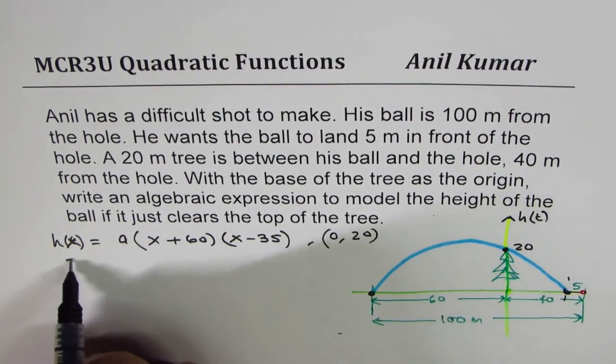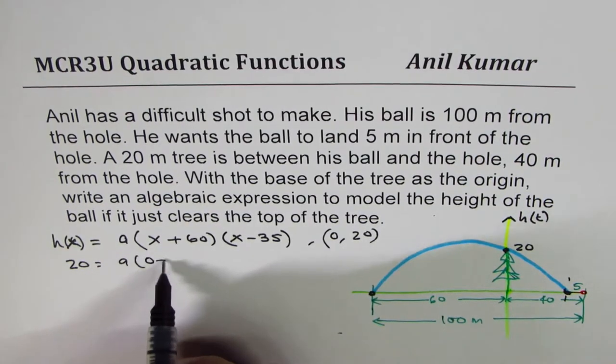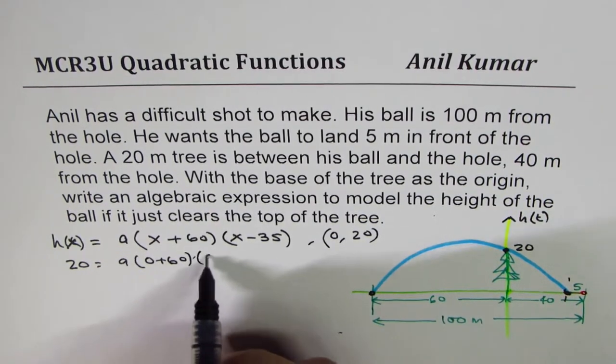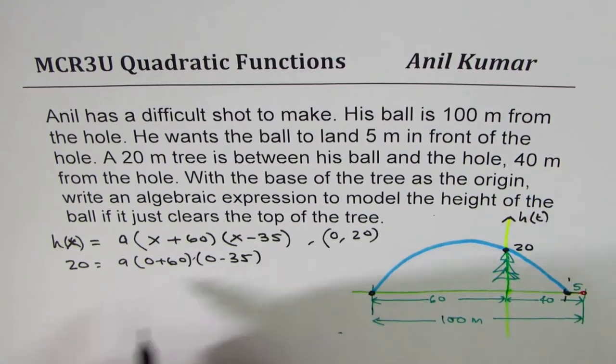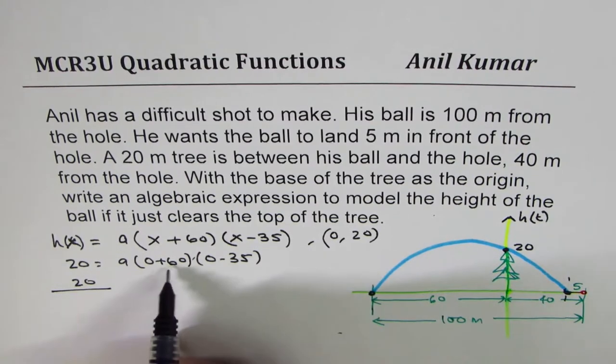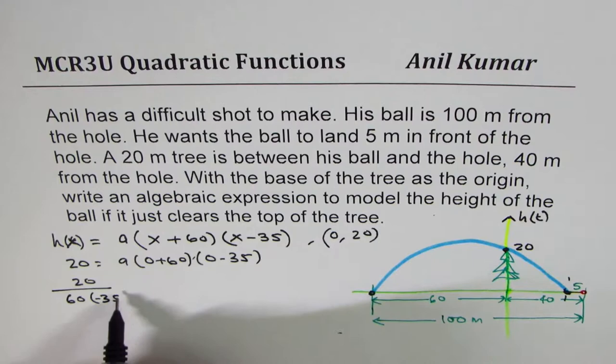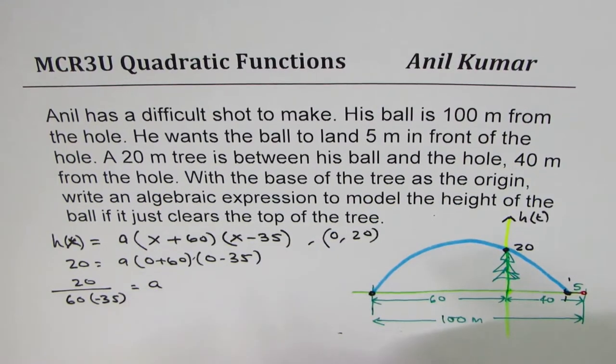So I could write here 20 equals to a times 0 plus 60 and 0 minus 35. So we get 20 divided by 60 times minus 35 as the value of a.